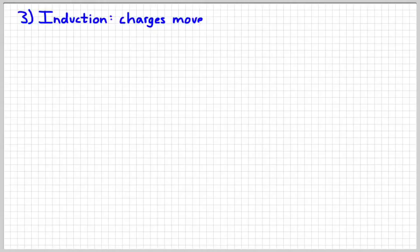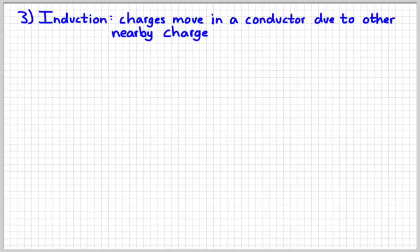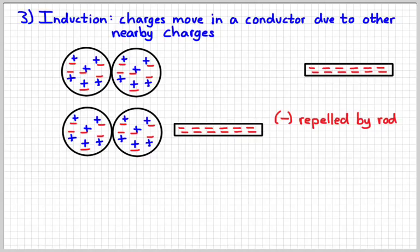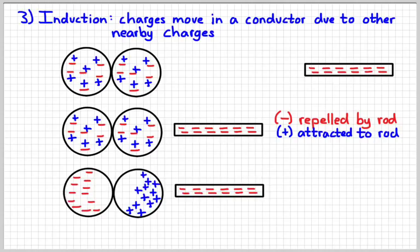The third way to charge an object is via a process called induction. Induction refers to when charges move in a conductor, so similar to conduction. The difference is when it's caused by other charges nearby. So, for instance, if we took two neutral spheres which are conductors, and then we took a negatively charged rod, like a rod we rubbed with fur to make it negatively charged, if we brought the rod close, but not touching, to those two spheres, the negatives inside the spheres would be attracted to the rod, the positives in the spheres would be repelled by it, and so we get something that'll look more like that. Negatives move over to the sphere on the left, and the positive charges move over to the sphere on the right. When that happens, the left sphere becomes negatively charged, the right sphere becomes positively charged, and we say that the charges have been separated by induction.